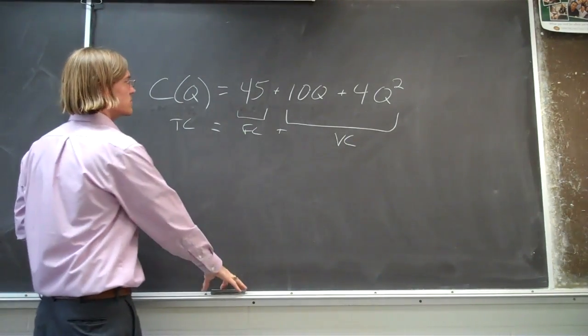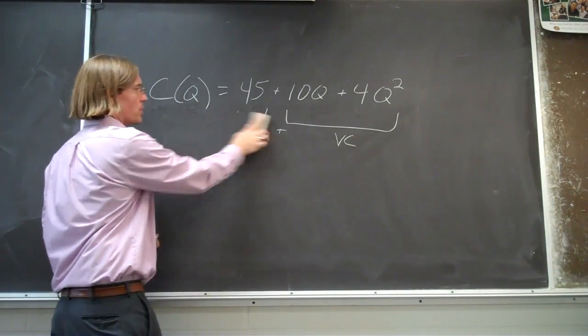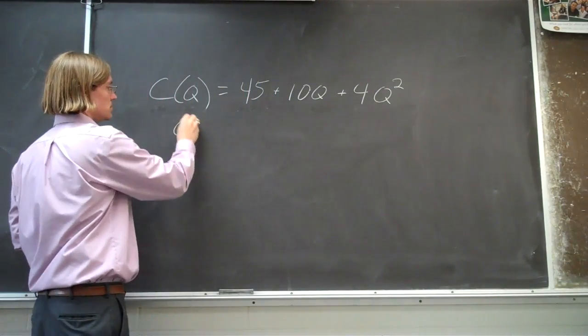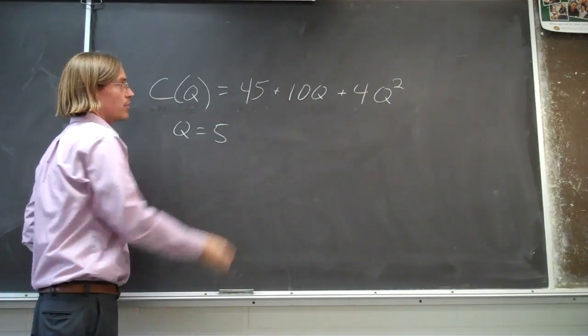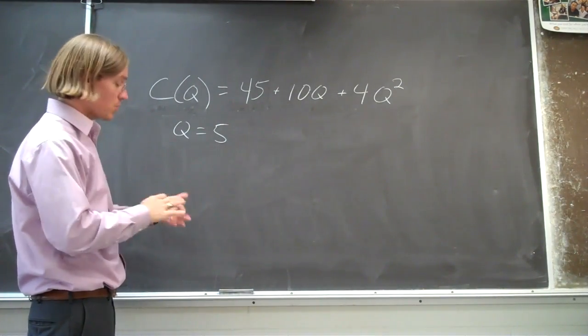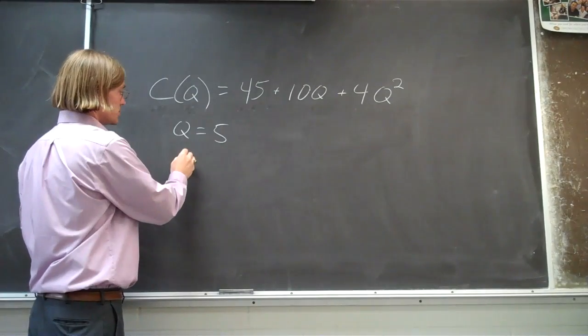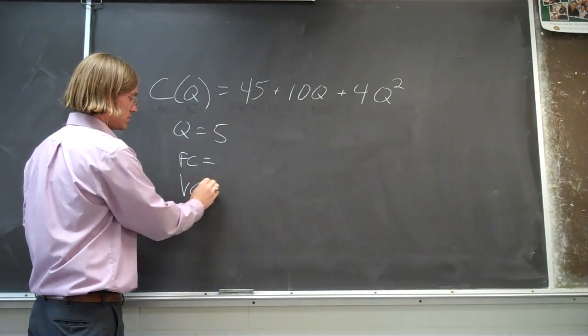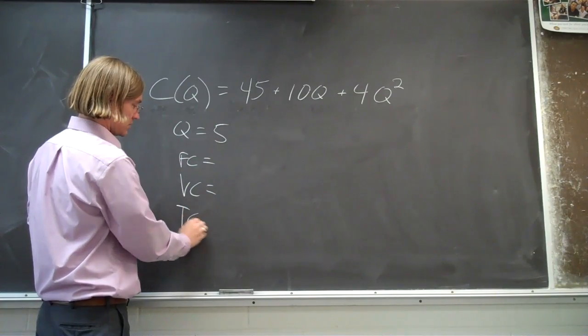If we were to assume that we want to produce a certain amount of output, let's say Q is equal to 5, we want to make 5 units, we could ask a couple questions. We could ask for the fixed cost, the variable cost, and the total cost.